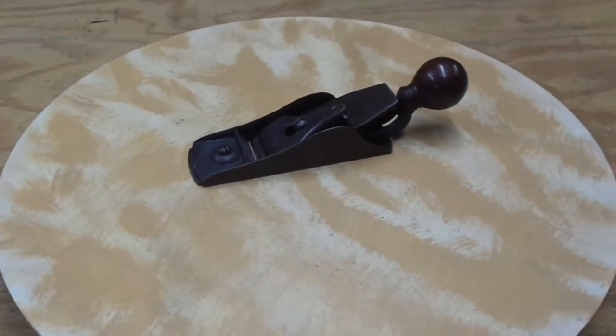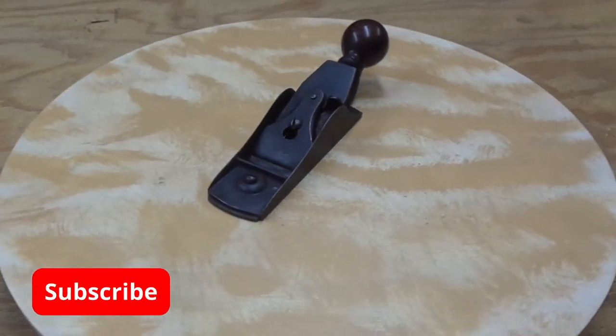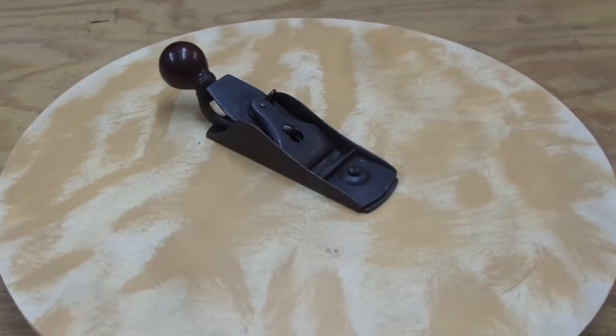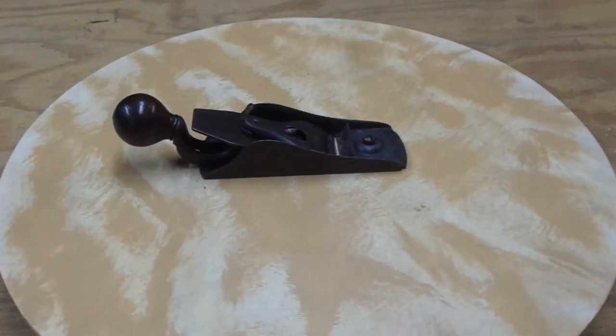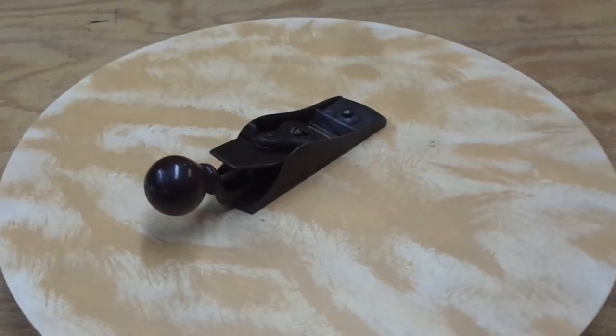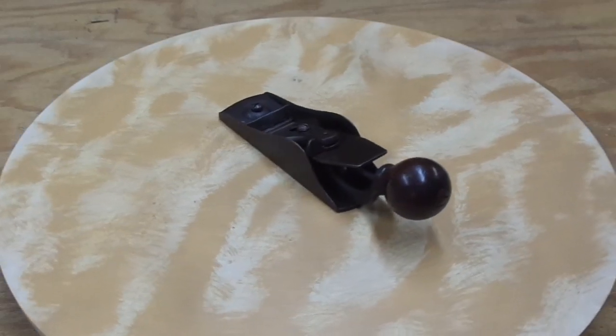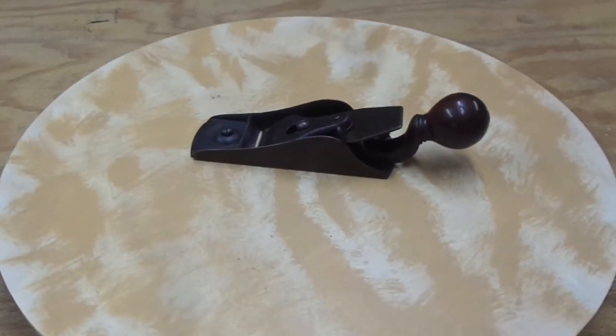Hello everyone, so good to have you back in the workshop. This is a Stanley Bailey block plane, a nine and a half or nine and three quarters. And this is a type one, meaning the very first rendition of this block plane that Stanley ever made back in the 1870s.